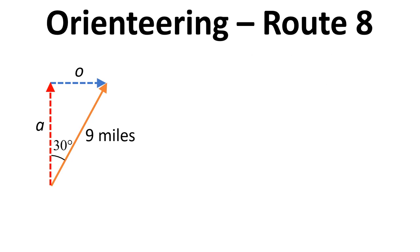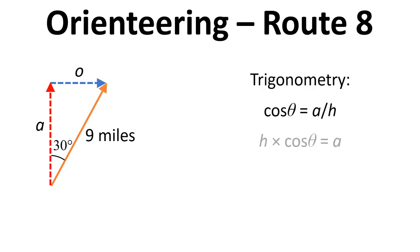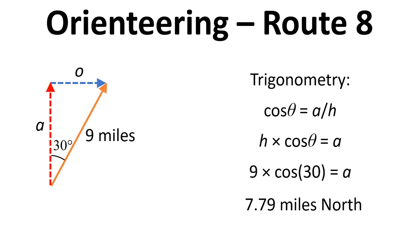For the north component we do something very similar but use cos θ, and this time we get 7.79 miles north.